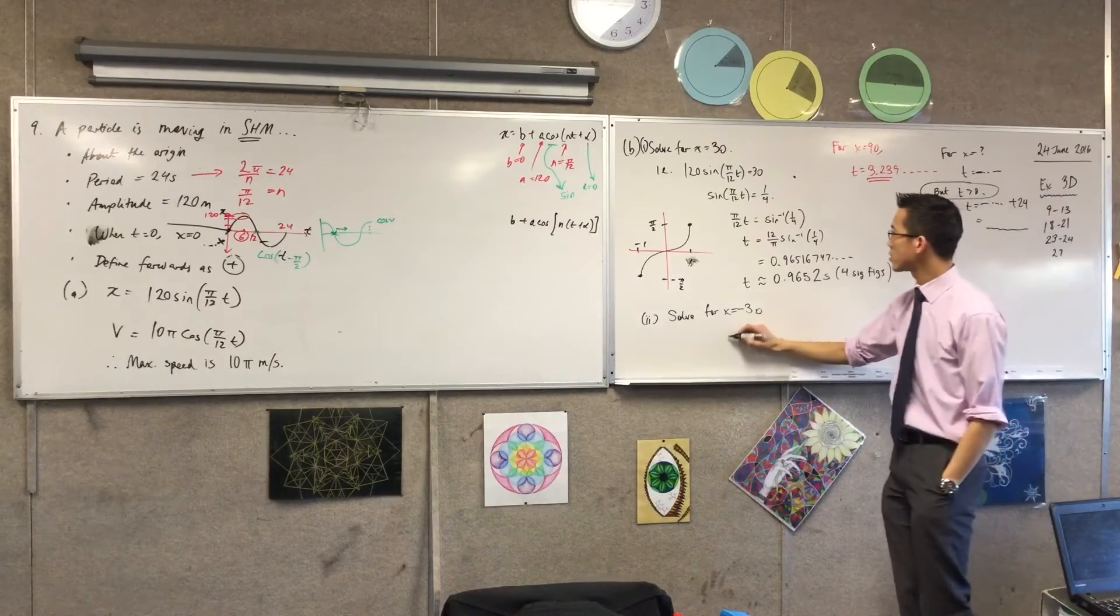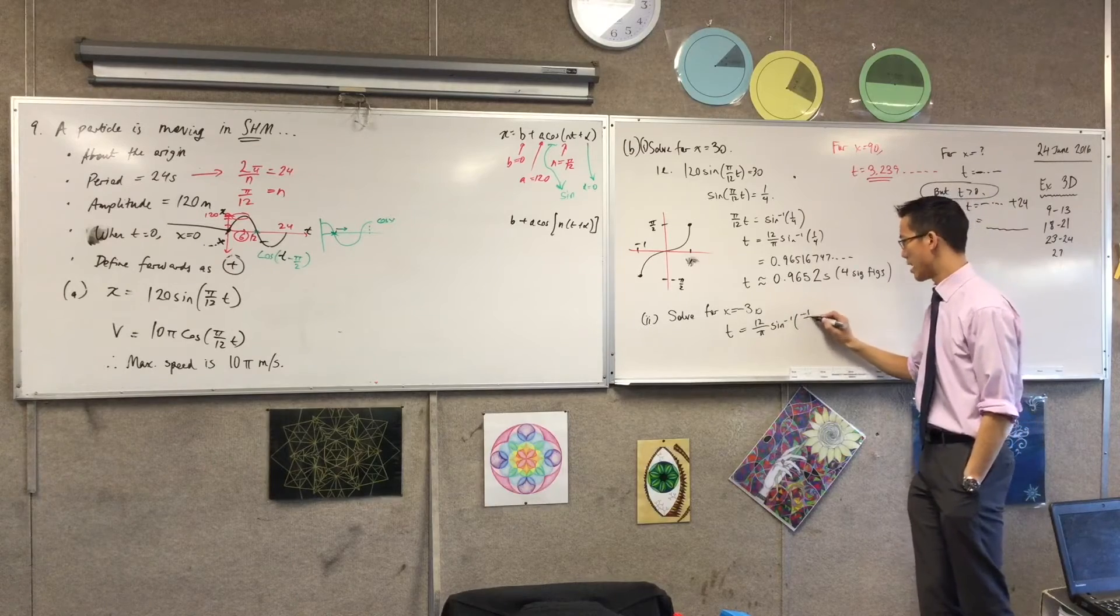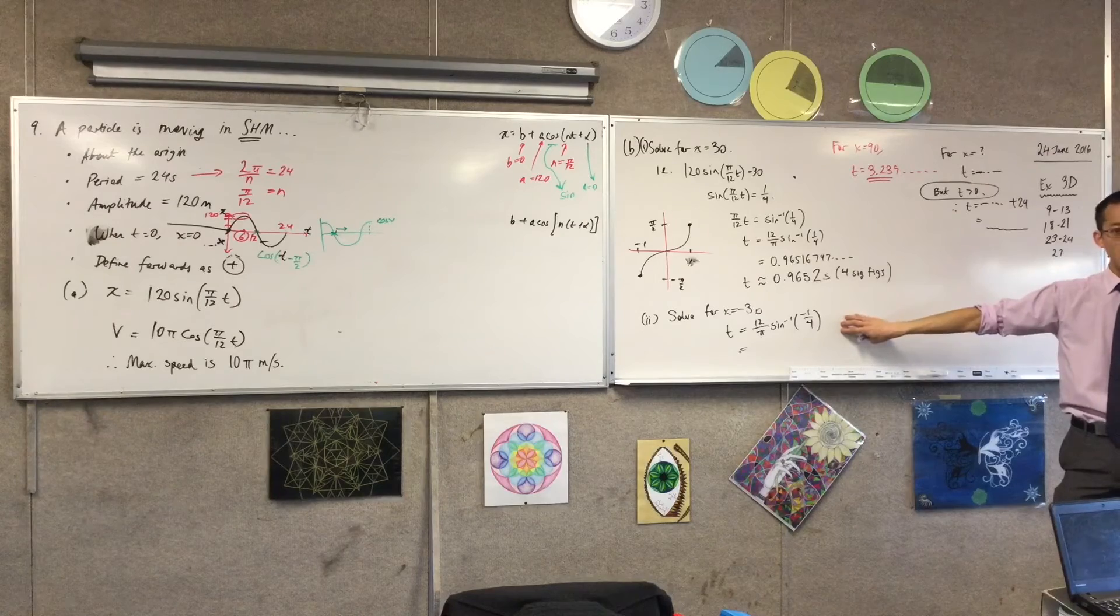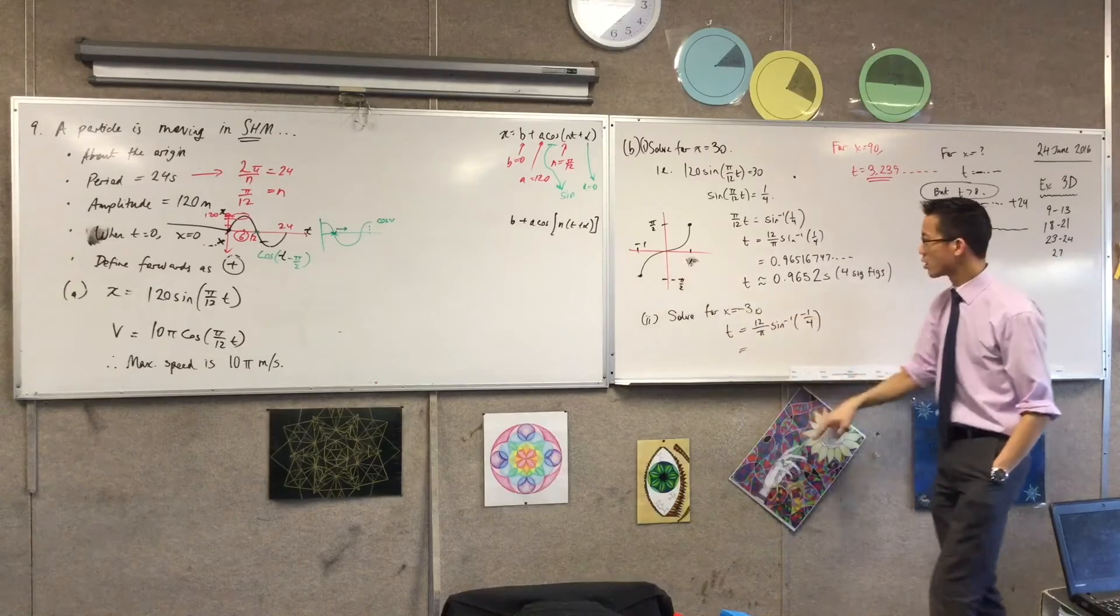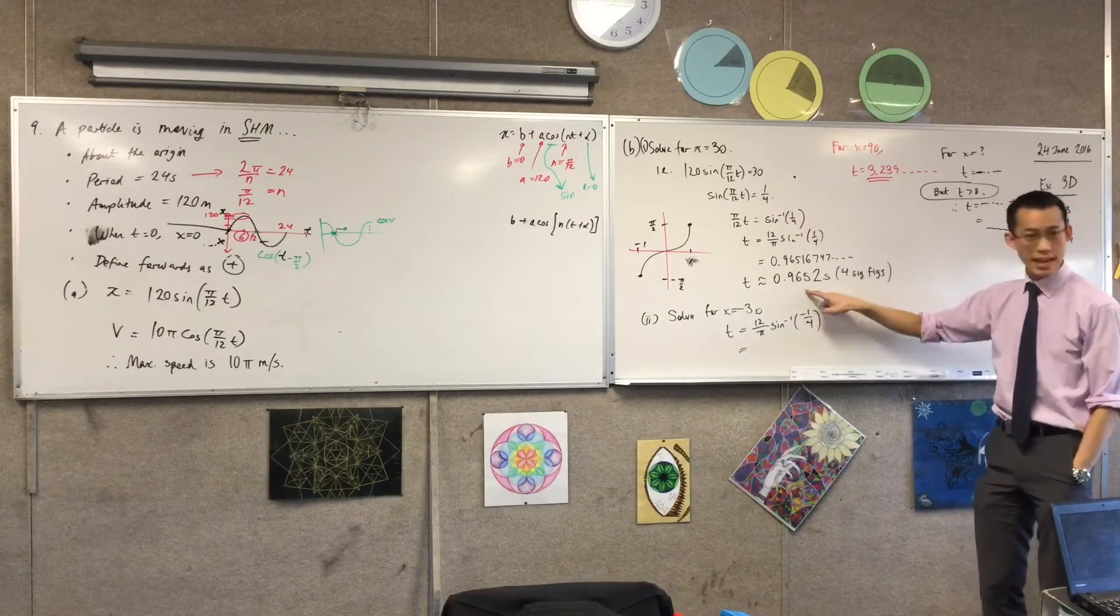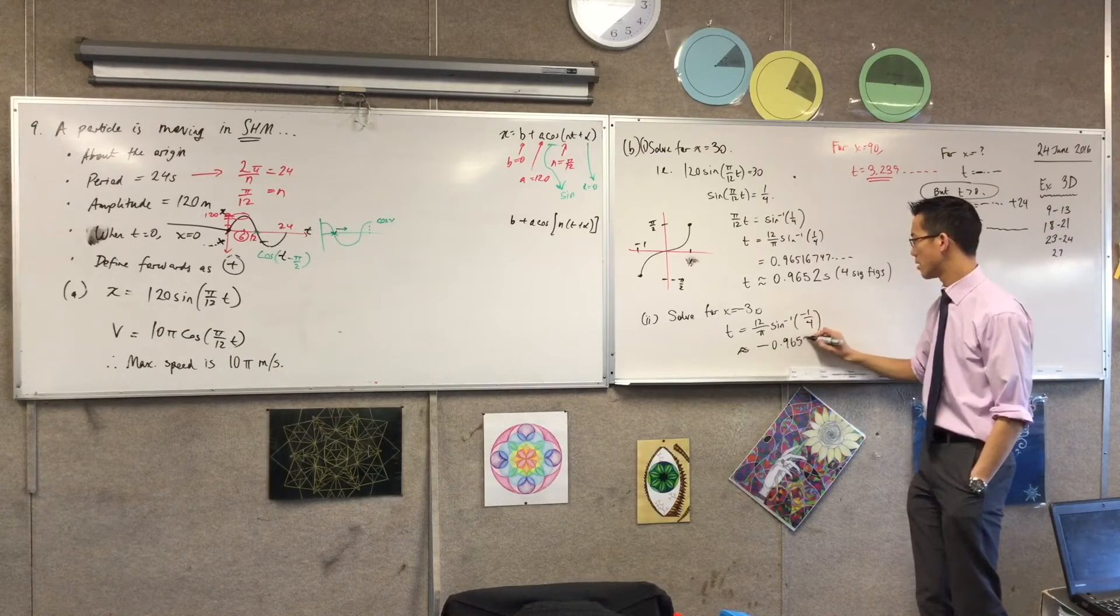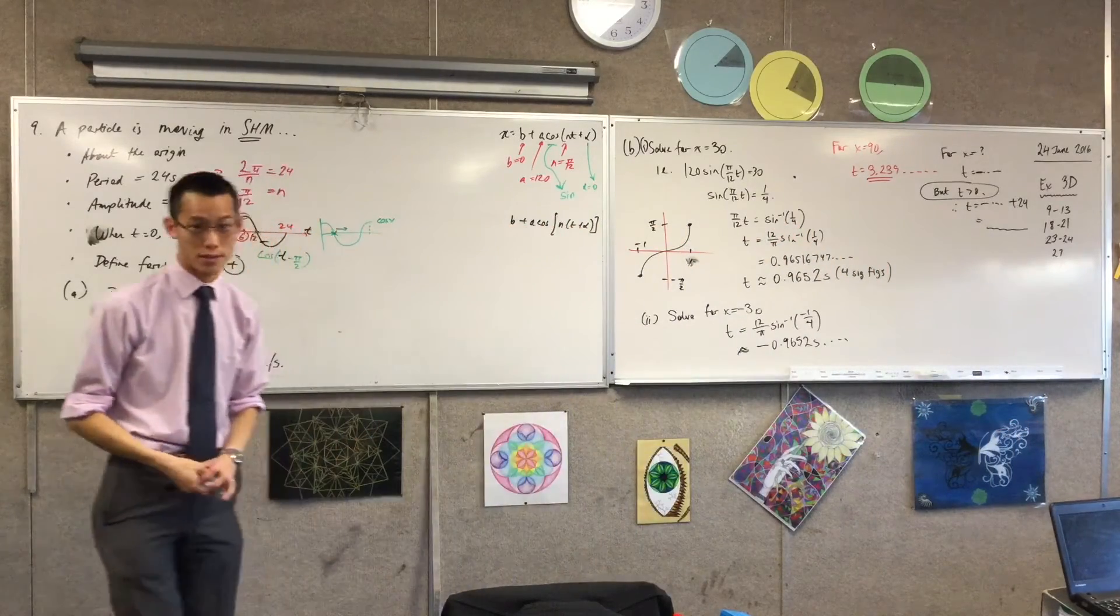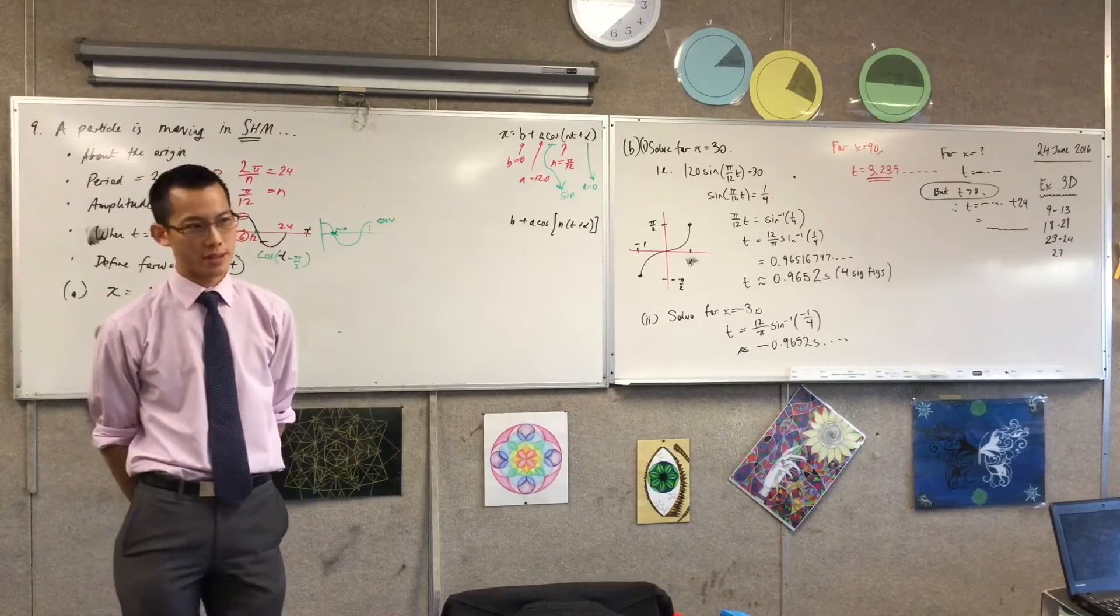So I think we will. When we get to t equals 12π, sine inverse of negative a quarter, you can already see this is going to give you a negative answer. Because sine inverse has what kind of symmetry as a function? It has odd symmetry. So if I put in a positive number here, this should give me exactly the negative of this. So I'm just going to go straight to the approximate one. But that doesn't make sense. I'm looking for the first time. I don't want to do any Doctor Who business and go back in time. So what will I do with this number?